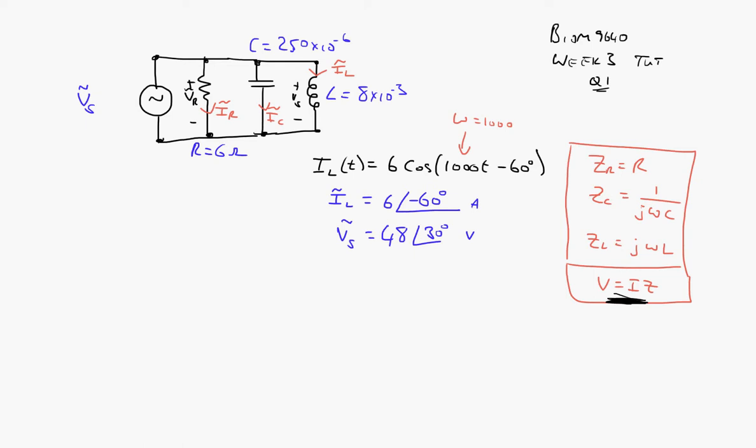This is question 1 part C. This last part asks us to figure out, using Kirchhoff's current law, find the magnitude and phase angle of the supply current, what they call IS.